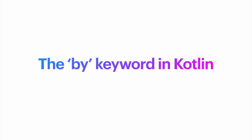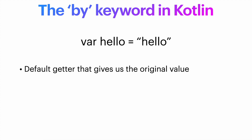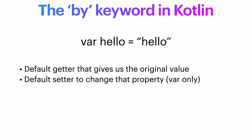Let's make it simple. In Kotlin, every variable has an implicit getter and setter. For example, when we have var hello equals hello as a string, and later we access the hello variable, we actually invoke the default getter that gives us the original value. The same applies when changing this property — we invoke the default setter. In the case of a val, there is no setter, so only the getter applies.